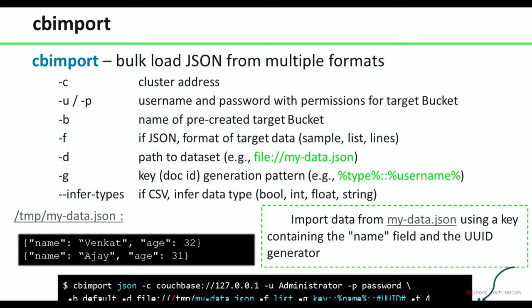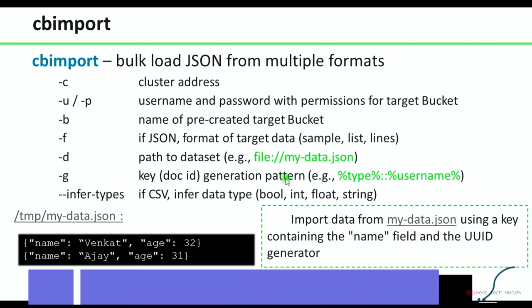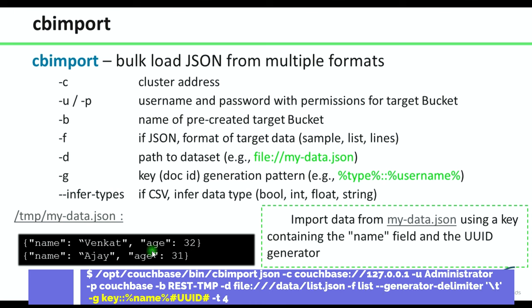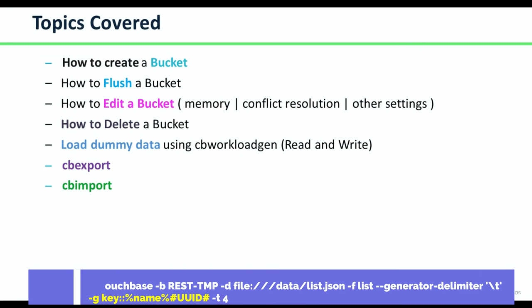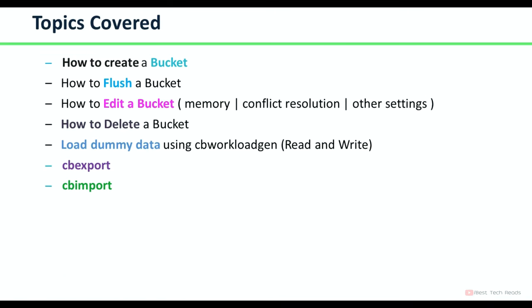CB import is used to bulk load JSON from multiple formats. When importing data, we are using a key containing the name field and the UUID. These are the topics covered in this video — this is the theoretical part I have covered. In the next video, I will be covering the practical demo for all these concepts.